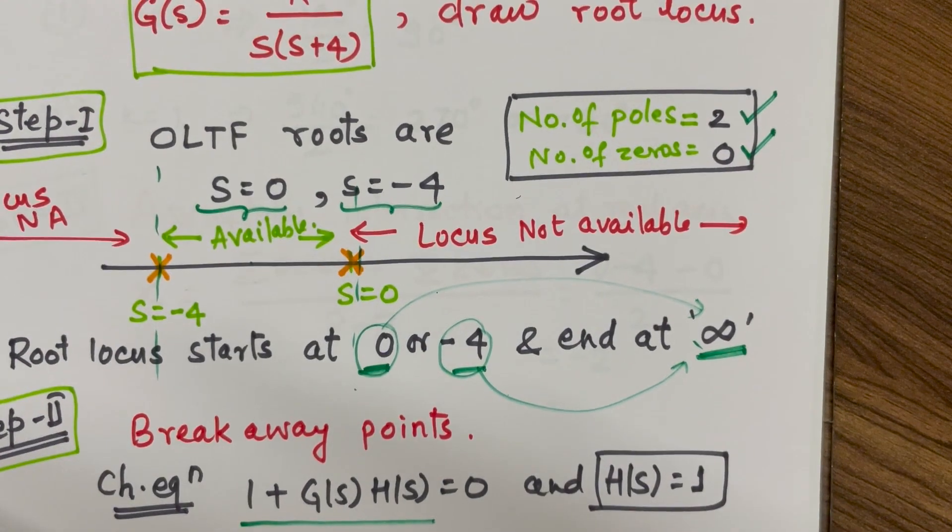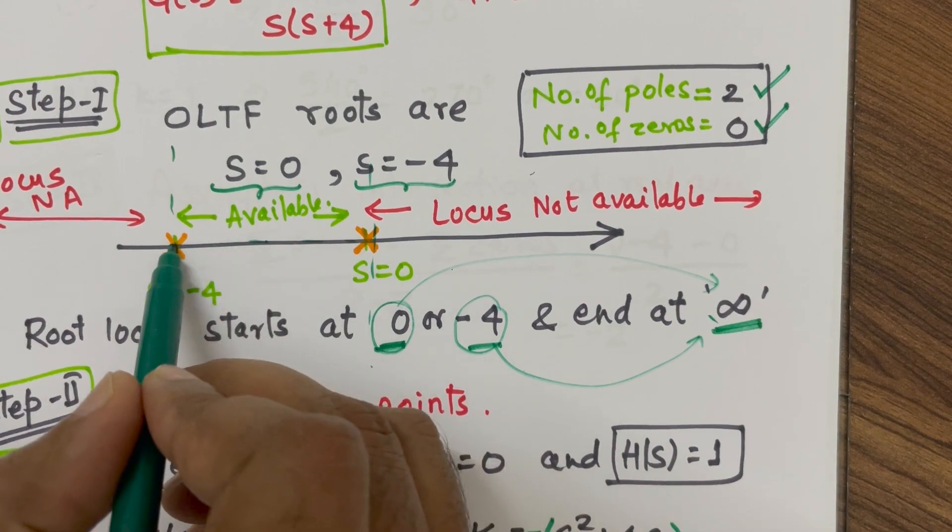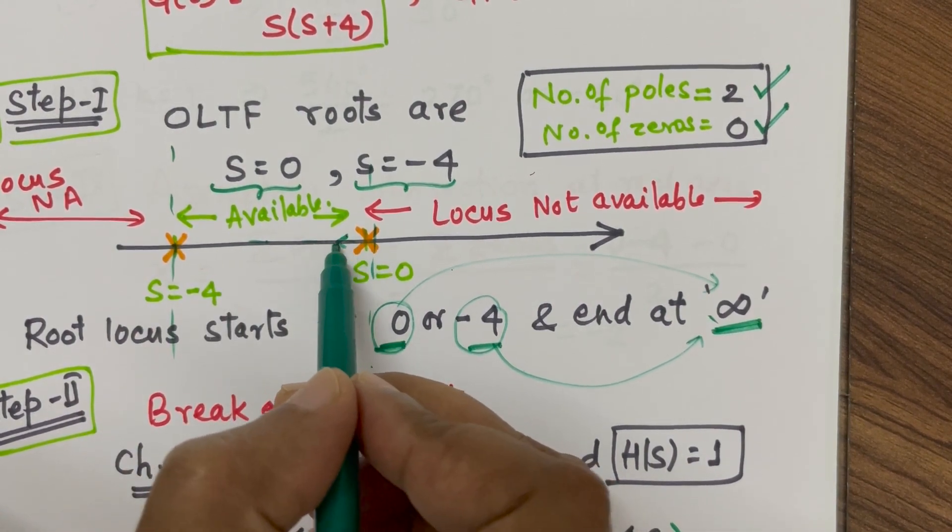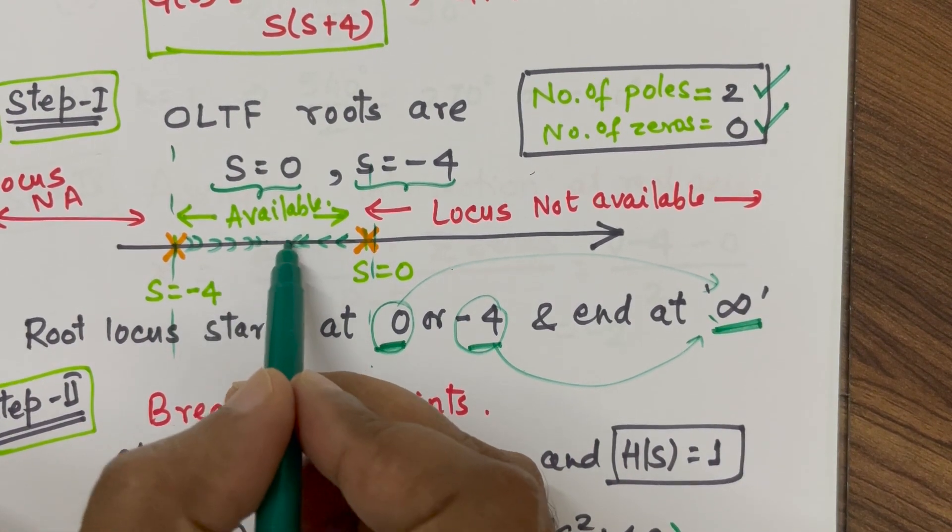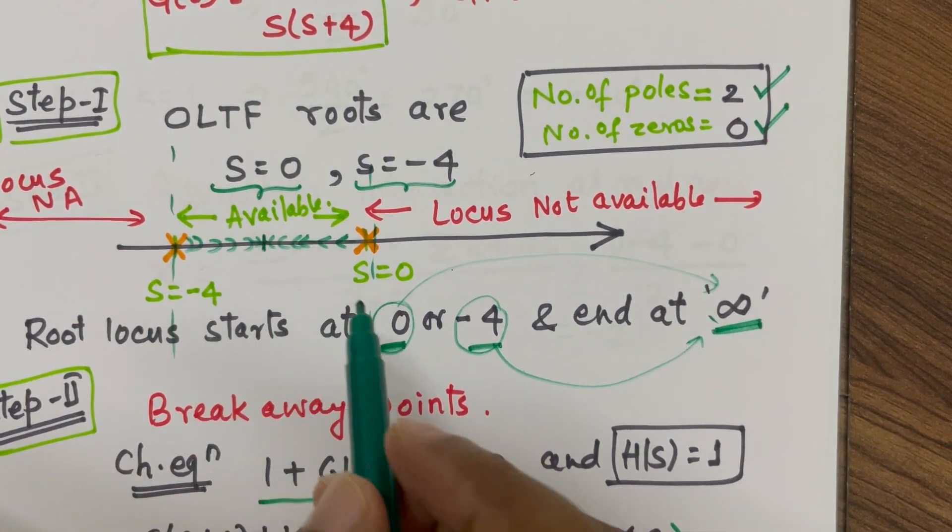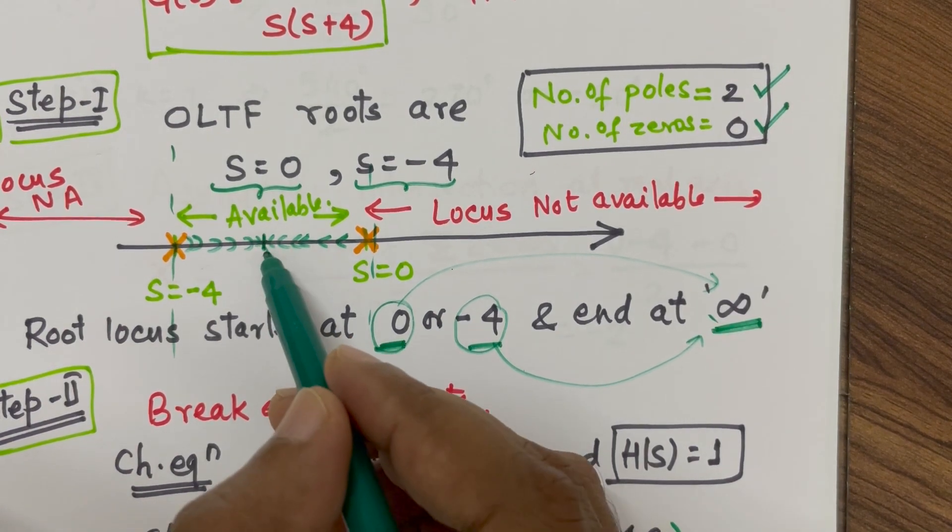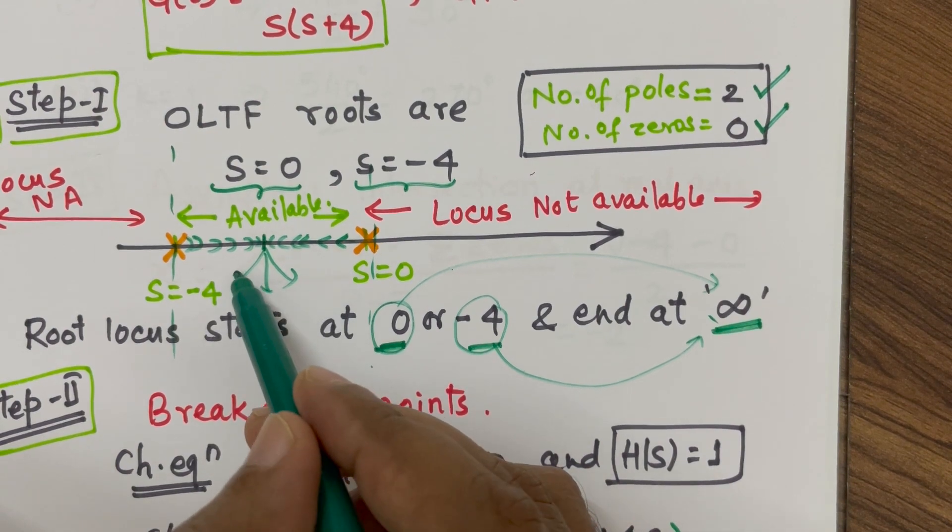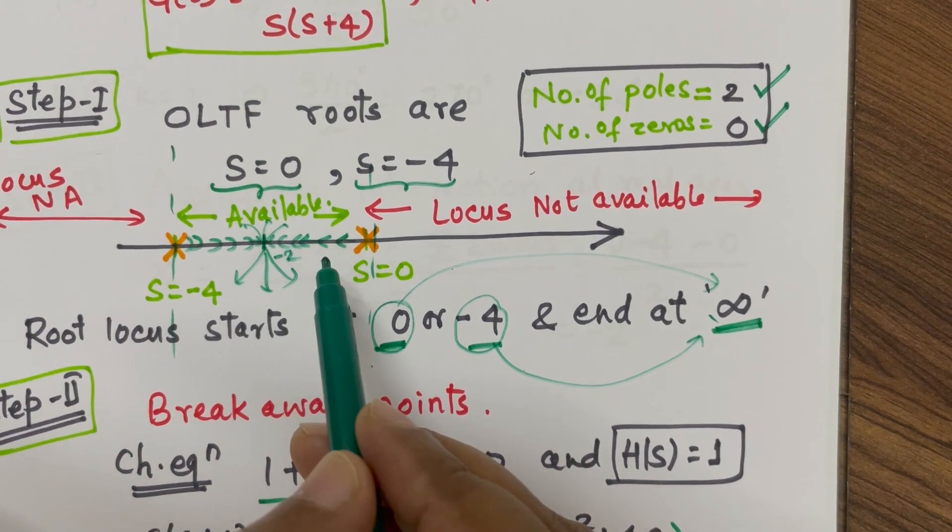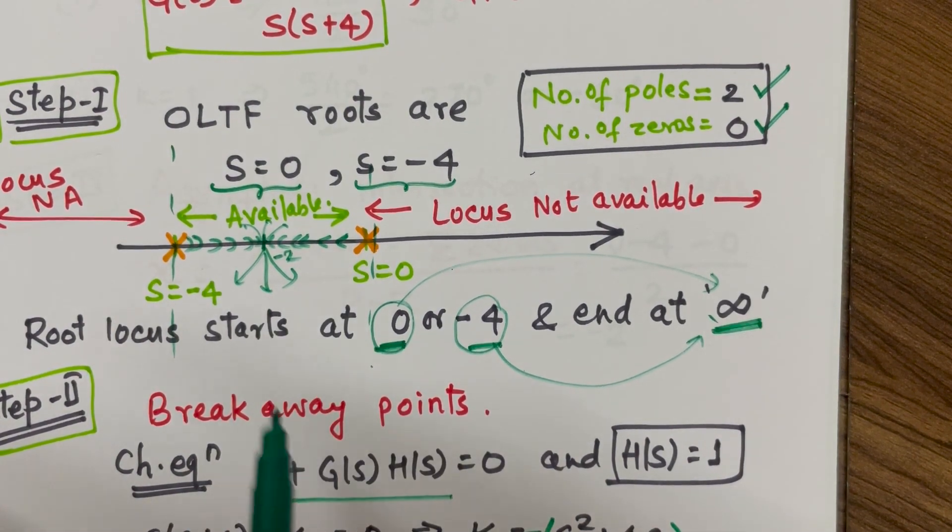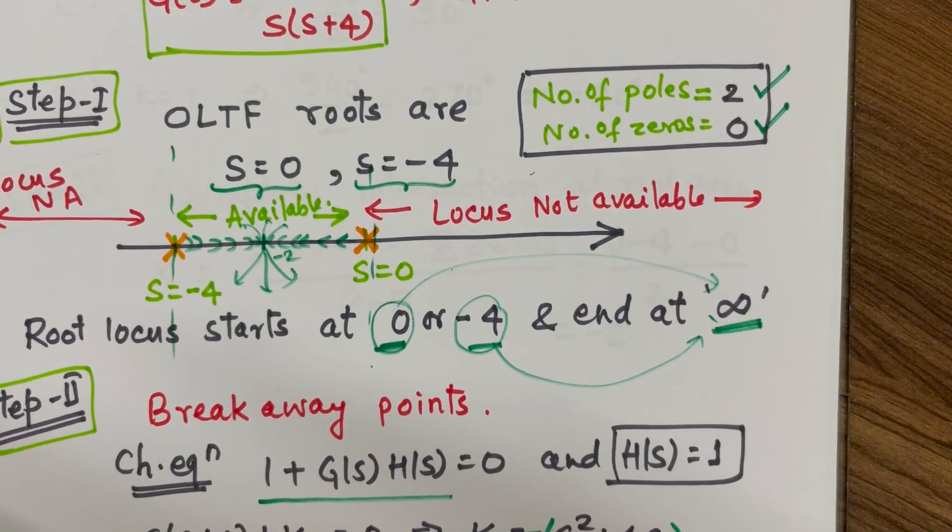Now, let us just analyze where will be the breakaway points. The roots will be available between these two. It will start from 0 and also 4 and in between somewhere, it is going to break away from each other and it move in any direction. That direction we are going to find next. In which direction it is going to move? It may move in any direction. So, this point is breakaway point which we have just now calculated. So, exactly at the middle it is going to meet and it will break away from each other.